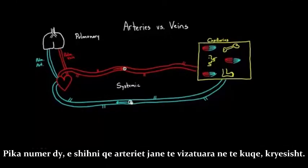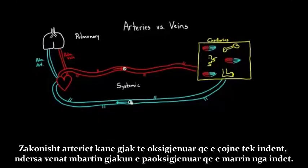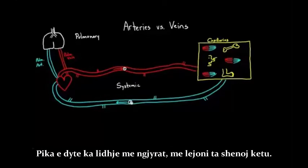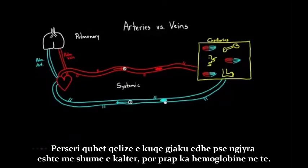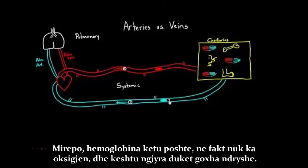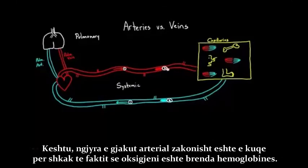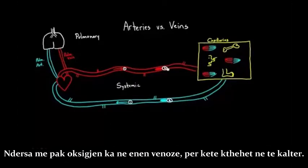Point number two: you see that arteries are drawn in red for the most part. Usually, arteries carry oxygenated blood out to the tissues, while the veins carry the deoxygenated blood back from the tissues. So point number two is really about the color. A red blood cell with hemoglobin in it carries oxygen in the arteries. In the veins, it's still a red blood cell, still with hemoglobin, but the hemoglobin doesn't have oxygen bound to it, so the color looks quite different — it turns blue.